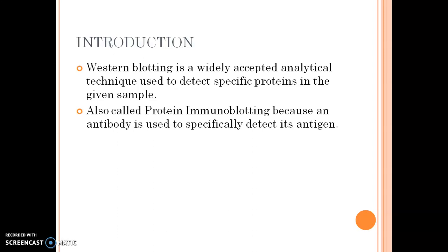The protein which is going to be identified will act as an antigen. We use antibodies specific to that antigen — that is, the protein — in this technique. Hence it is known as the immunoblotting technique.